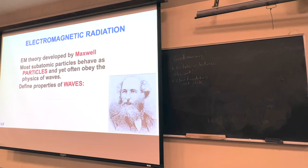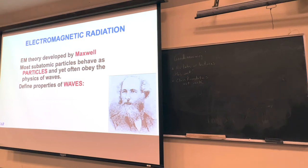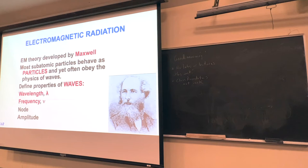Maxwell — this guy with the cool beard — was the first to put a lot of the theories of electromagnetic radiation into practice. He talked about particles and waves. From Maxwell's equations we got a better idea of what waves are. Electromagnetic radiation is essentially a series of waves, so if we understand what a wave is, we can start understanding electromagnetic radiation and get into those wild electrons and Schrödinger. All waves have a wavelength and a frequency — that's going to be really important to us.